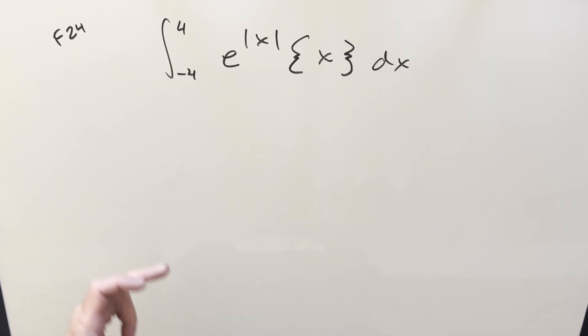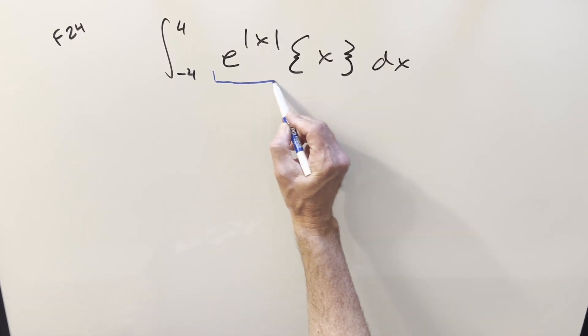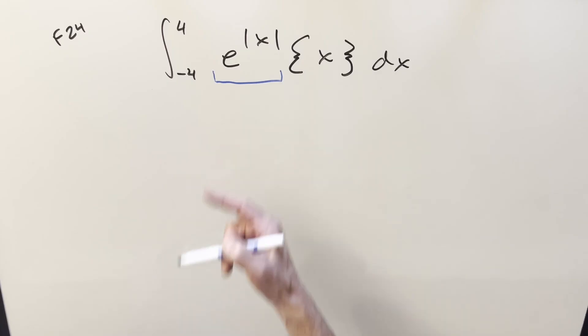At first I was thinking about the bounds. Whenever you have symmetric bounds, you're thinking even or odd functions. We do have an even function right here because the absolute value takes care of any minus sign. But this function is not even or odd because of the fractional part, so we need to look at it a different way.